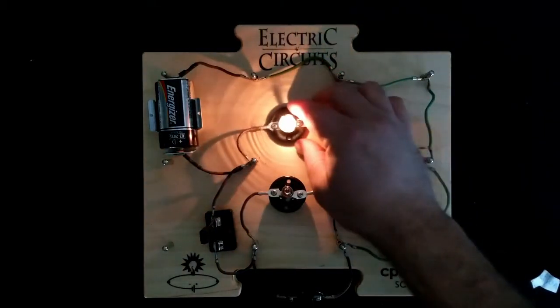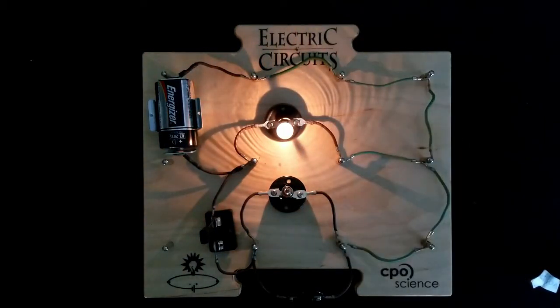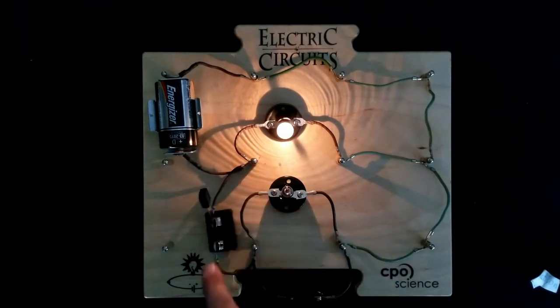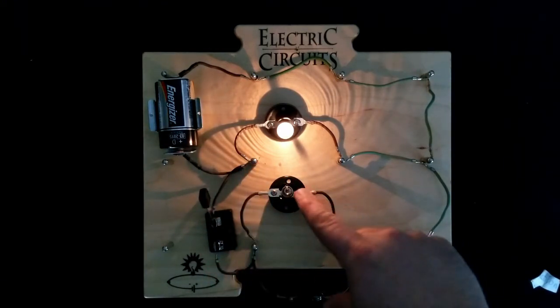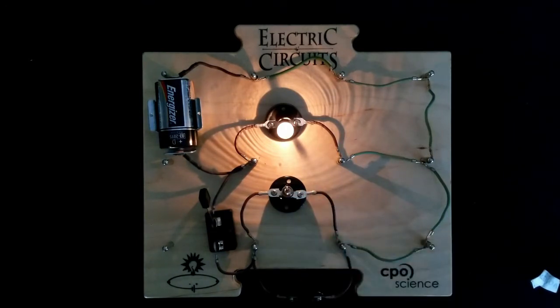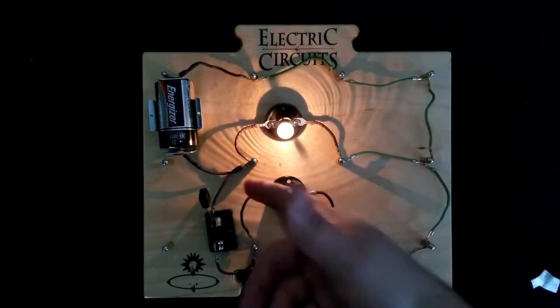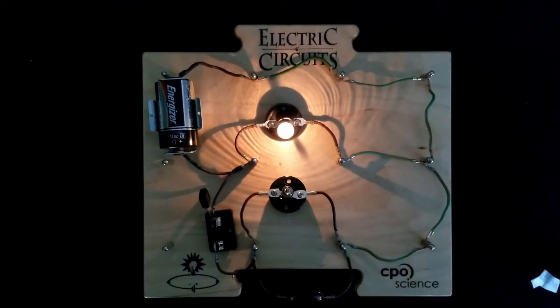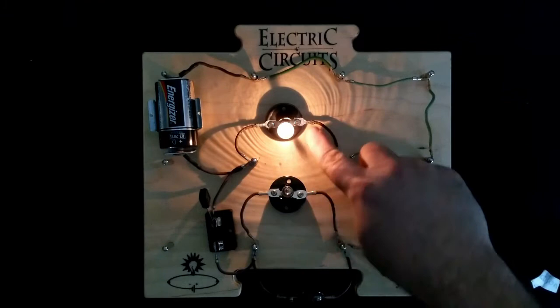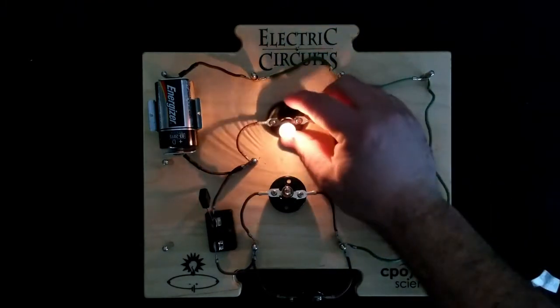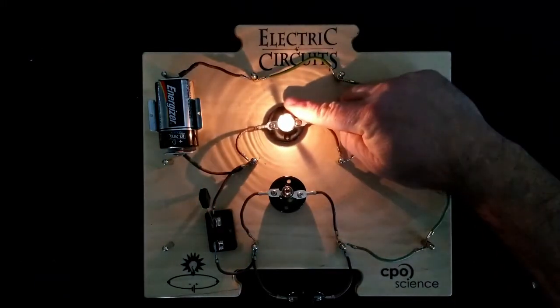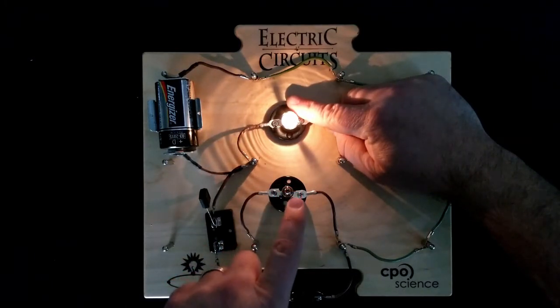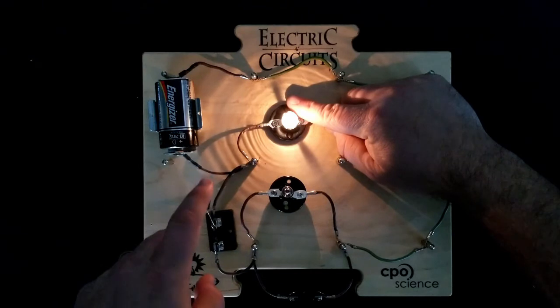That light bulb is going to be an indication of what's happening to the battery. In this branch, which currently has an open switch, I've got two additional light bulbs in parallel—just two more so that I can get a lot of current going through this branch. What I want you to observe is what happens to the brightness of this bulb right here when I connect this part of the switch and draw current through these bulbs.